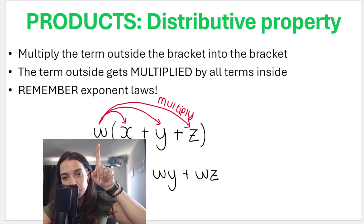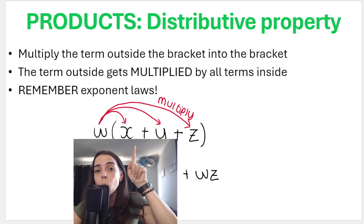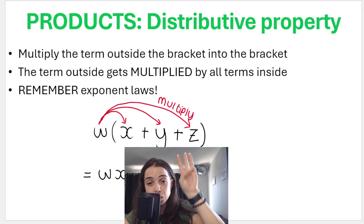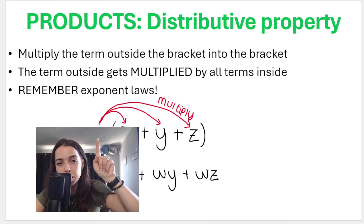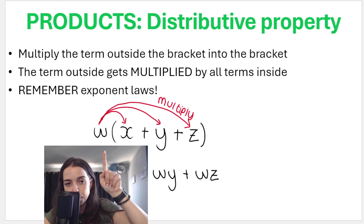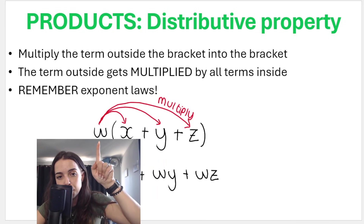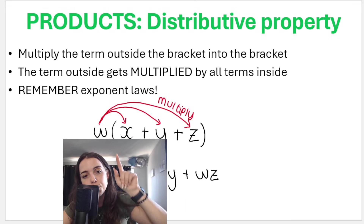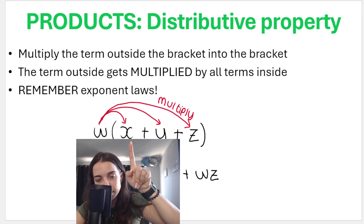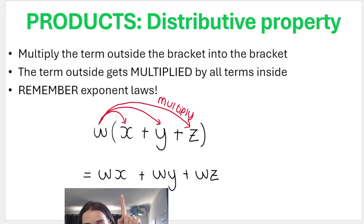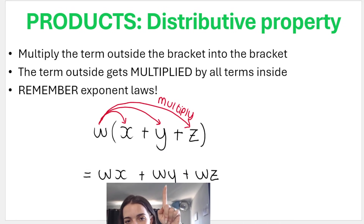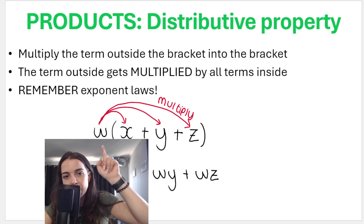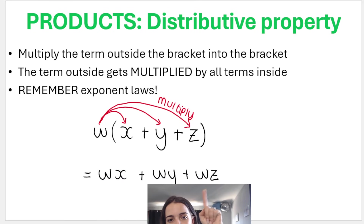The thing outside the bracket — the thing that's squashed up — gets multiplied by all terms inside. If there were two terms inside, you multiply the W by each term. But with three terms: W times X gives WX, W times Y gives WY, and W times Z gives WZ.